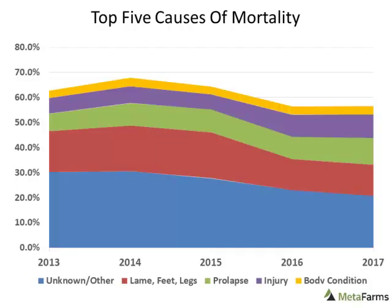Here's another graph looking at the top five causes of mortality. Number one was unknowns or others; the second highest was lameness, feet and legs; prolapse was third; injury and body condition were fourth and fifth. These do actually make up less of our total removals over time — that could be because we're getting better at categorizing death loss or getting a little better at putting those animals on a cull truck — but still a large portion of our mortality comes from those five causes.